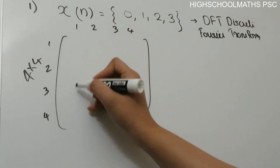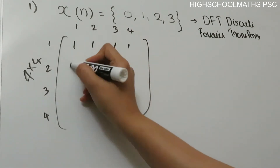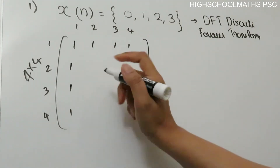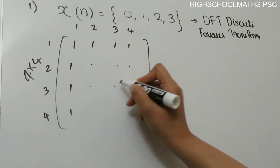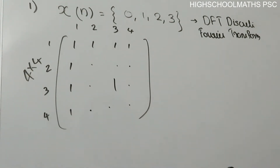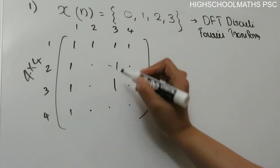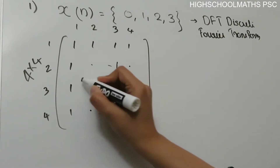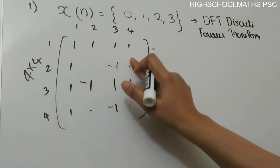First column, first row — fill with 1. The first row and first column of the 4x4 DFT matrix are all filled with 1s.